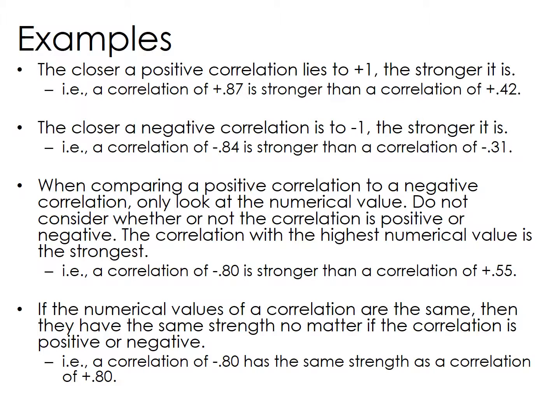The closer a positive correlation lies to plus one, the stronger it is. For example, a correlation of +0.87 is stronger than one of +0.52. The closer a negative correlation is to minus one, the stronger it is — for example, a correlation of −0.84 is stronger than −0.31. When comparing a positive correlation to a negative correlation, only look at the numerical value. The correlation with the highest numerical value is the strongest.